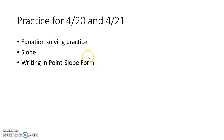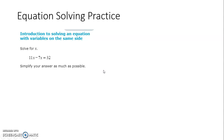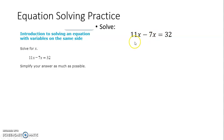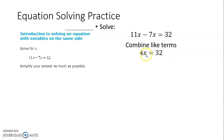Alright, so like I said, we're going to do equation-solving practice, a little bit more of that, slope, and writing in point-slope form. So let's just do a quick practice. We're going to solve this equation here. We have 11x minus 7x equals 32. We need to combine our like terms, so 11x minus 7x is 4x. That still equals 32. Now to get x alone, we just divide by 4 on both sides. The 4s cancel, and we get 32 divided by 4. That's just 8.